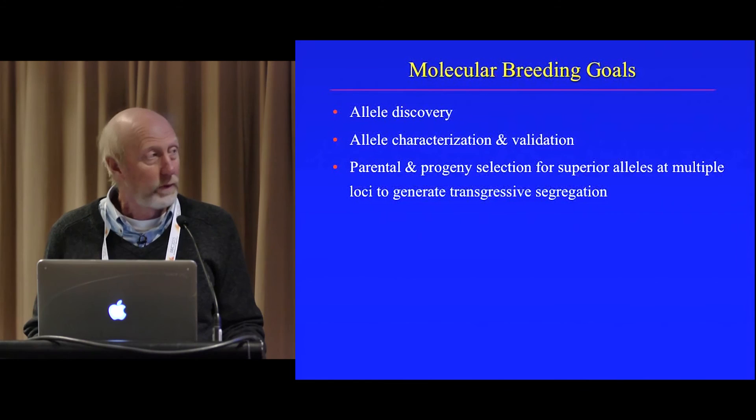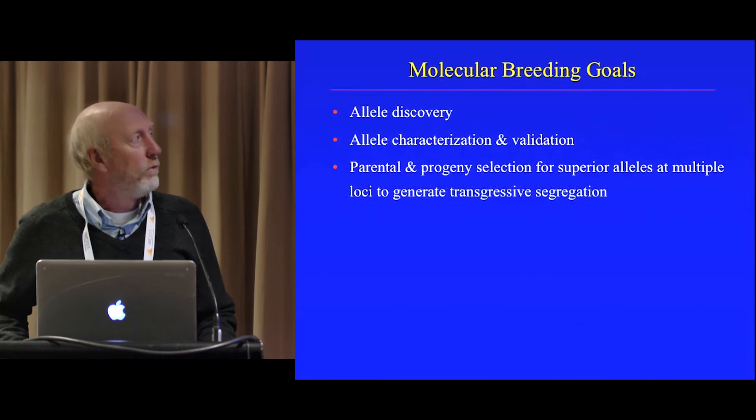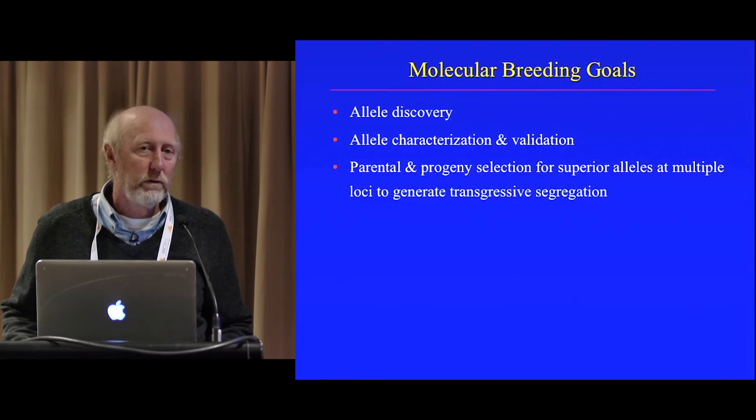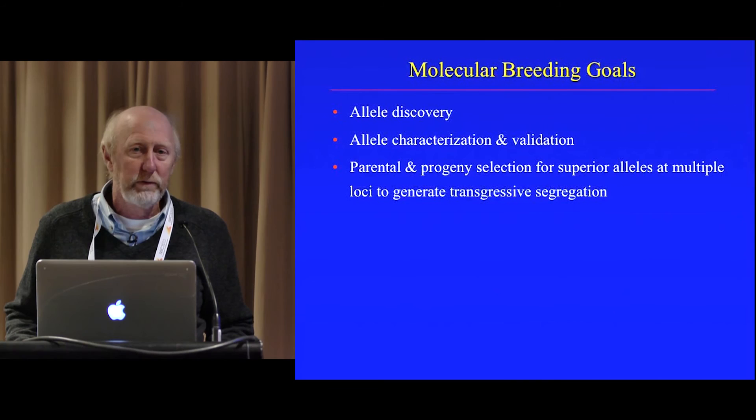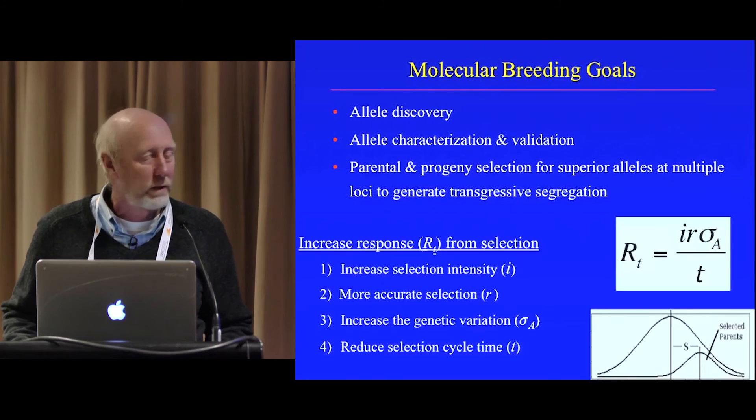In molecular breeding strategies, we're really trying to first discover new alleles. We characterize those alleles and identify those that are positively influencing the traits we're interested in. Then we try to combine those superior alleles in a single genotype to realize transgressive segregation for that trait.